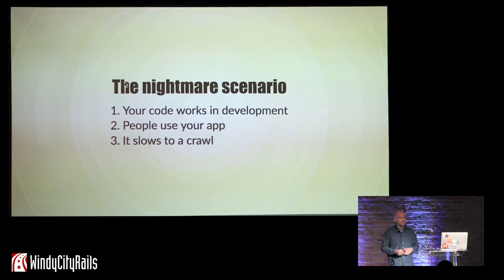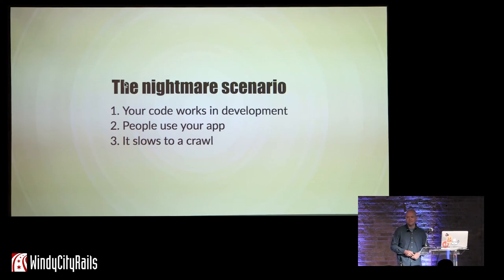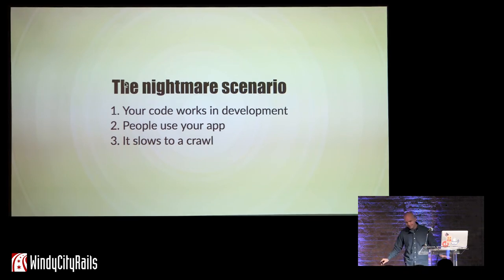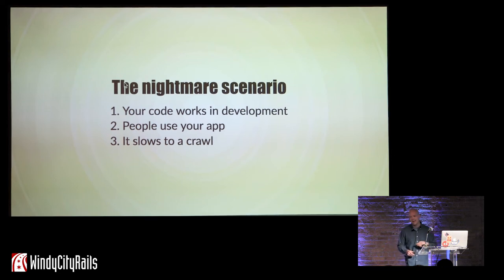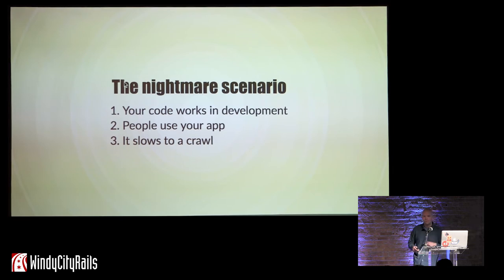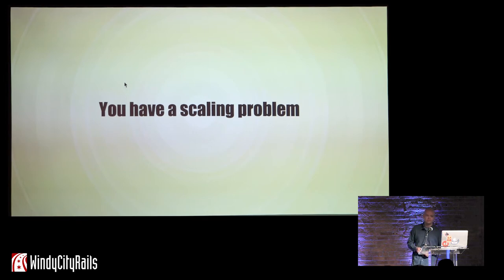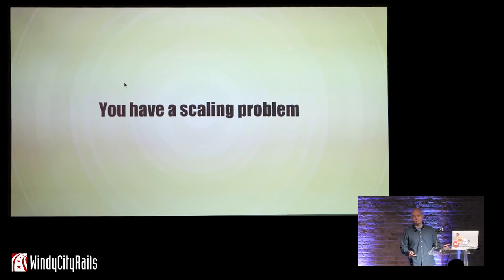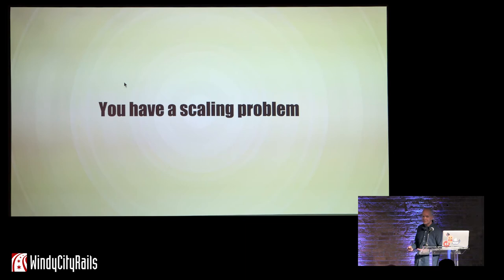If you've been deploying Rails apps for any amount of time, you've probably come across a scenario where your code works fine in development — it's performant, all the tests pass — and then you deploy it, people start to use your app, they start to add data to your database, and over time the database gets slower and slower. This is indicative of the fact that you have a scaling problem. So, how are you going to solve the scaling problem?